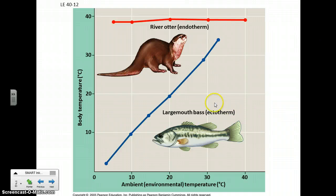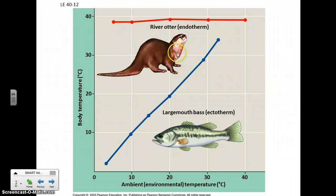Another characteristic of animals is metabolism and attempting to maintain homeostasis. We can classify animals into two types based on their body temperature.